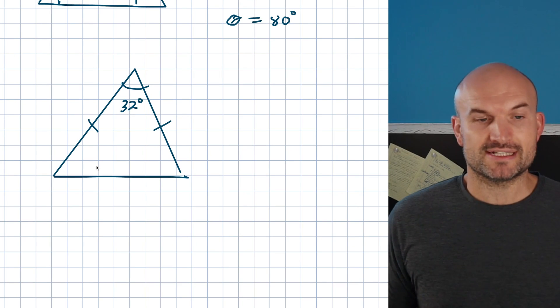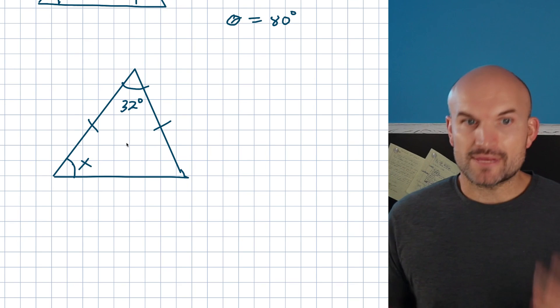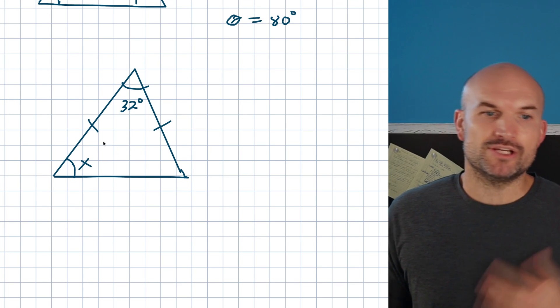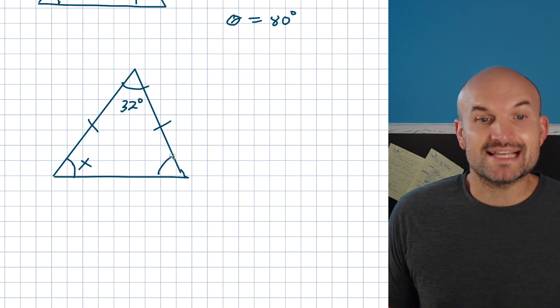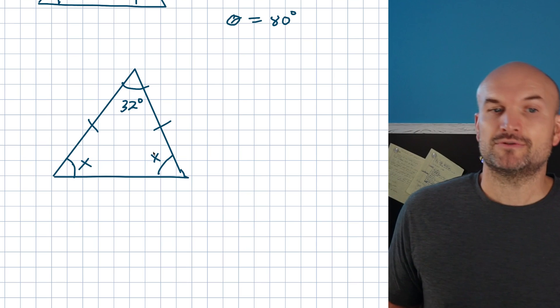Now, what if I had this angle, and we call this one 32 degrees, and what if I wanted to find this angle, and let's call this one x? Now, the important thing about knowing this property is when you have an isosceles triangle, that means these two sides are going to be equal to each other. That also means that these two angles are also going to be equal to each other.